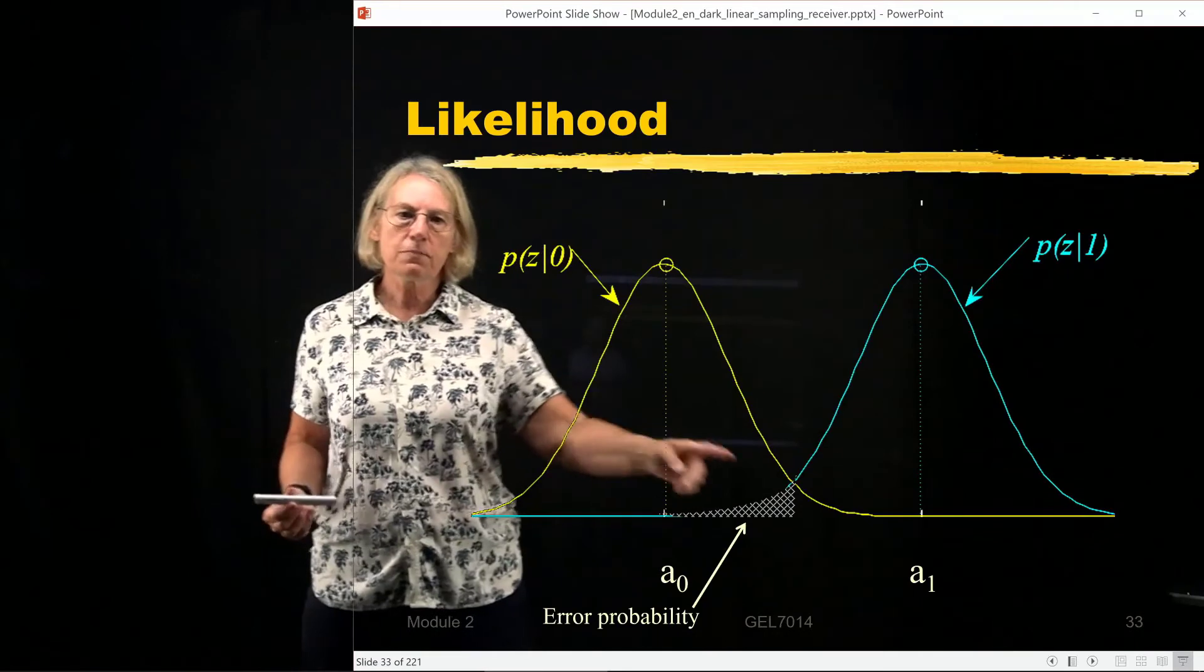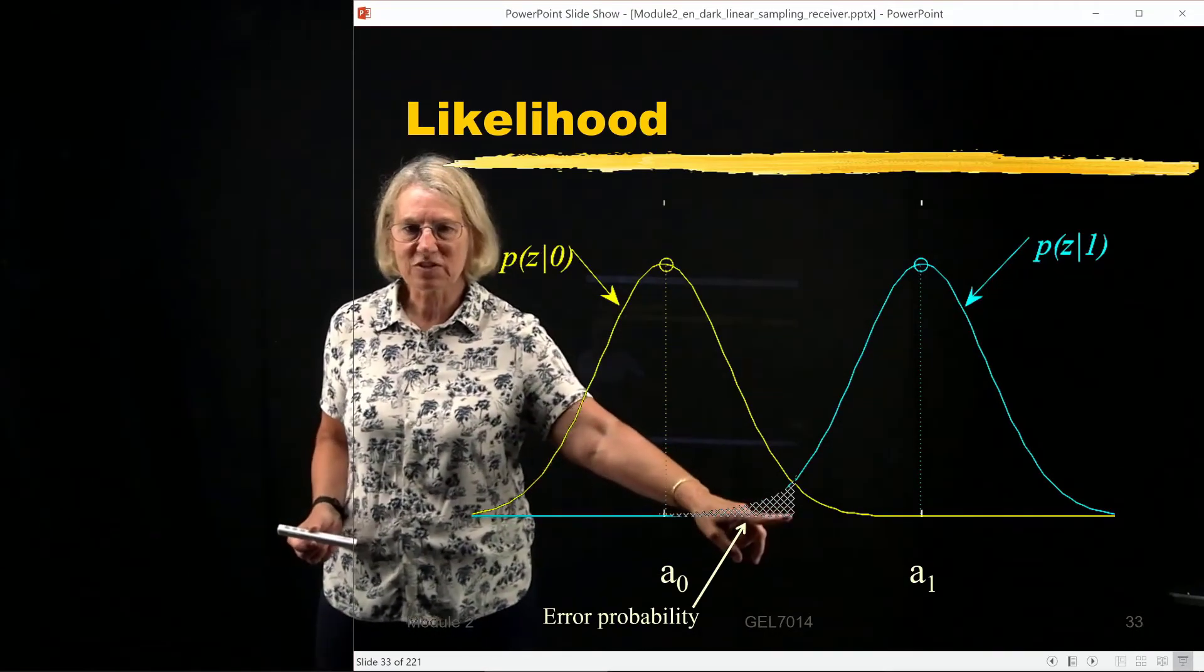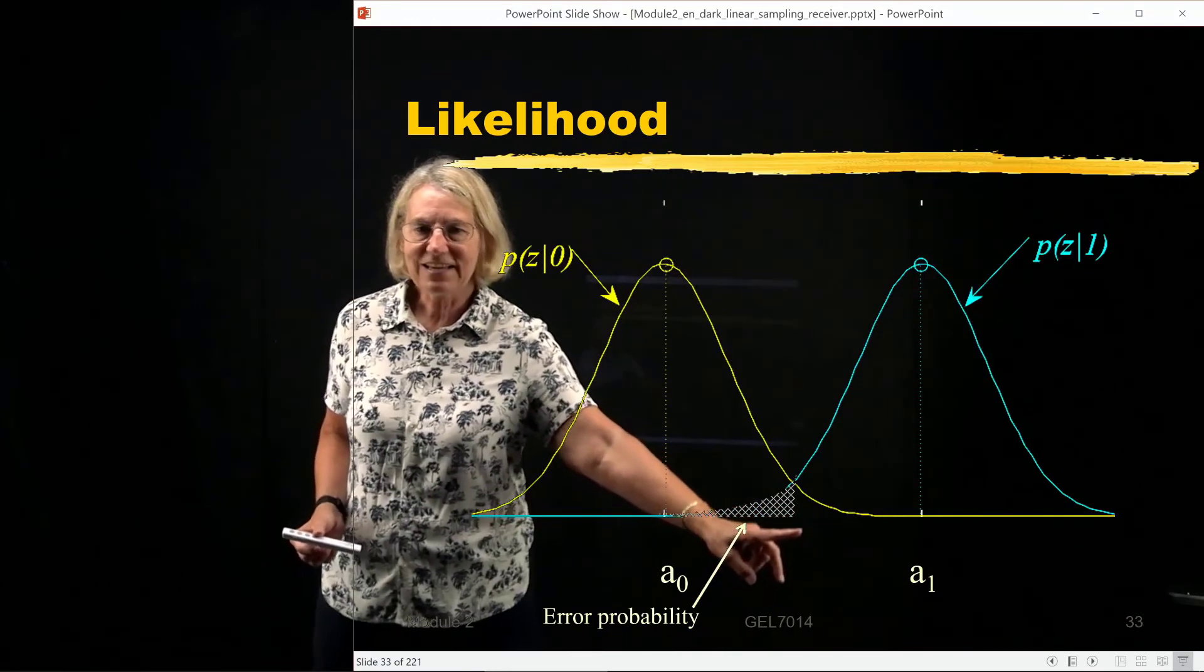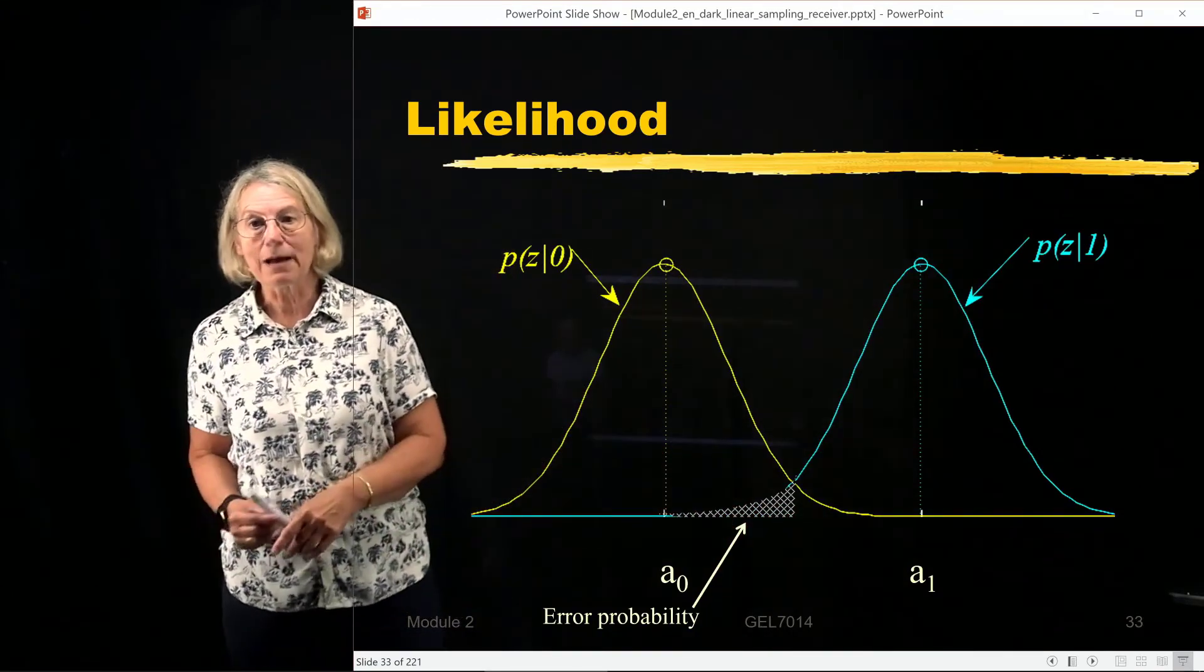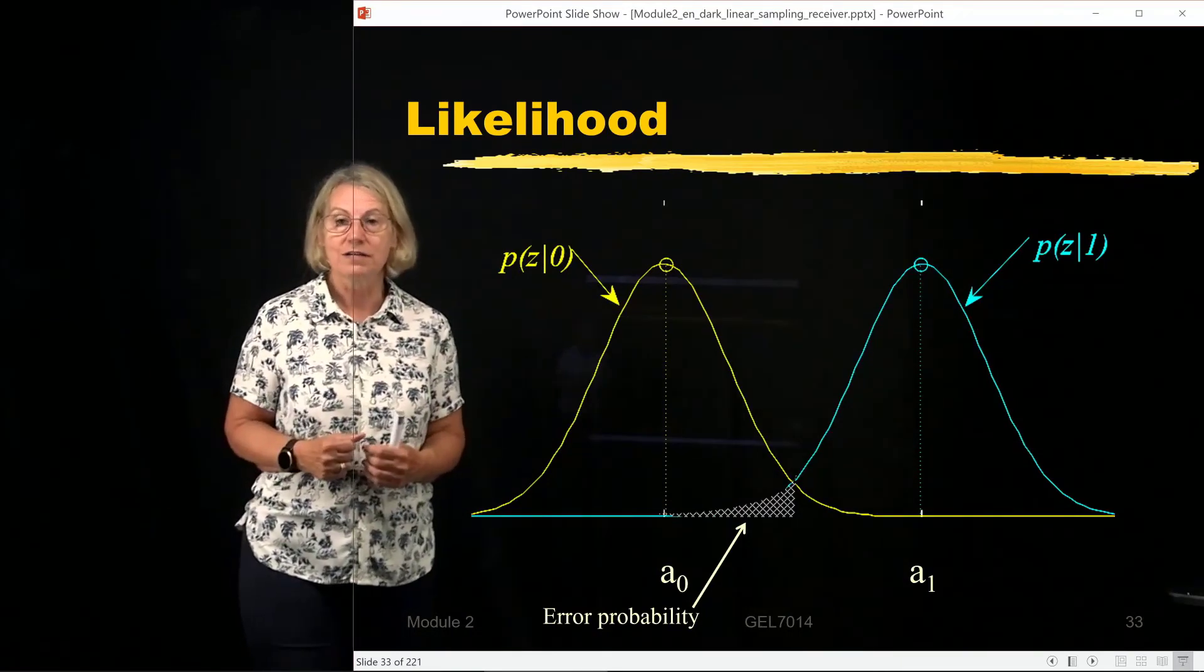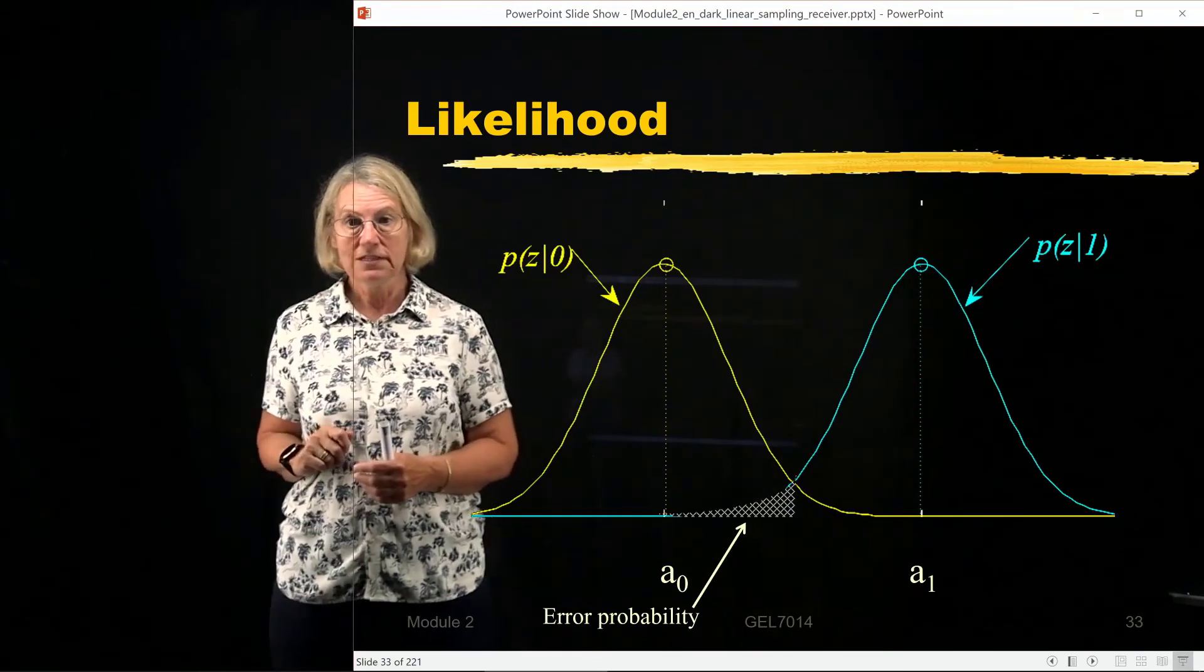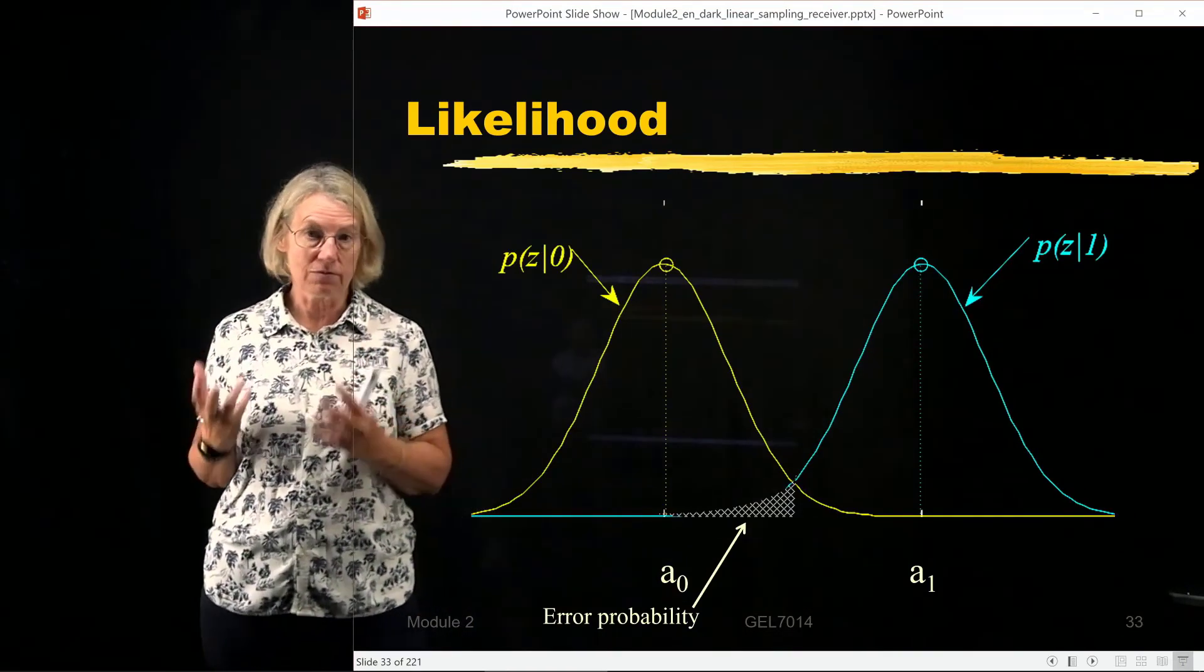So all of the probability, all of the possibilities, all of the z's that would give us this result would be any z less than gamma. And so the area under the curve gives us the probability that we will have an error.